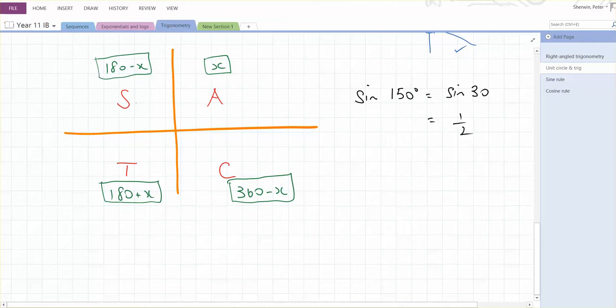So if we were looking at an angle of, say, 210 degrees, that's in the third quadrant, which makes this angle x 30 degrees. So its equivalent angle in the first quadrant is 30. And if it was tan 210, tan is positive in this quadrant, so it would have the equivalent value of tan 30 degrees.